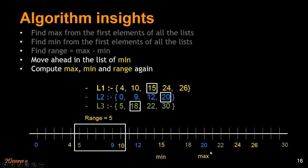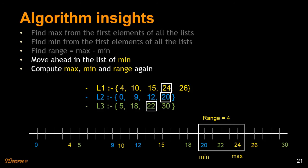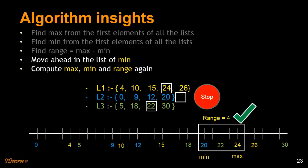We move L1's pointer from 15 to 24; max becomes 24, min becomes 18, range = 6 — no update. We then move L2 to 22; min updates to 20, max = 24, range = 4. We update the range — 24 minus 20 is 4, so the shortest range is now 20 to 24. Moving ahead in the minimum list, we find that list is exhausted, so we stop. The answer is range 4, from 20 to 24.